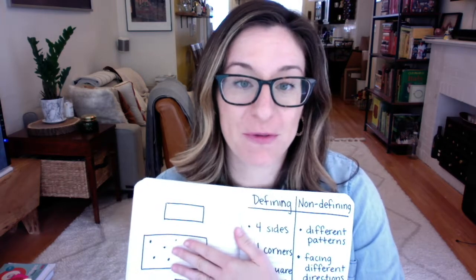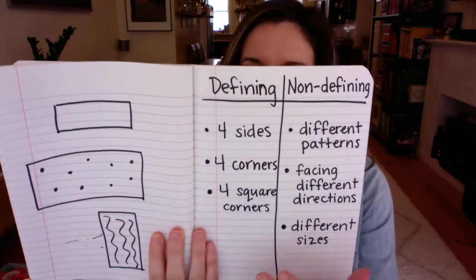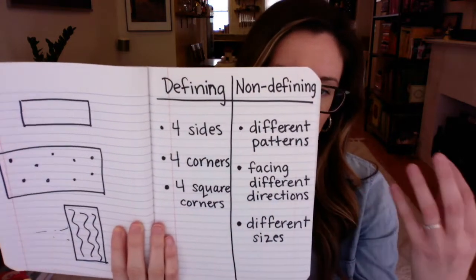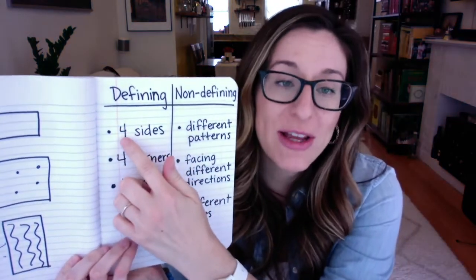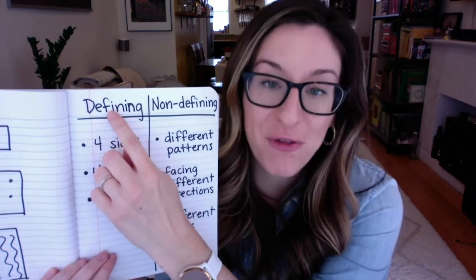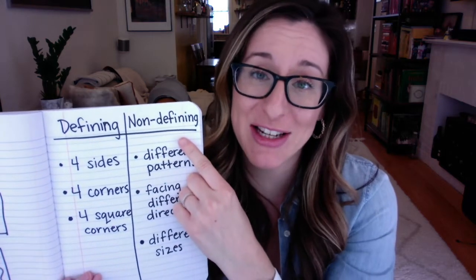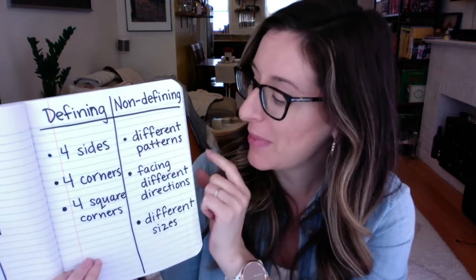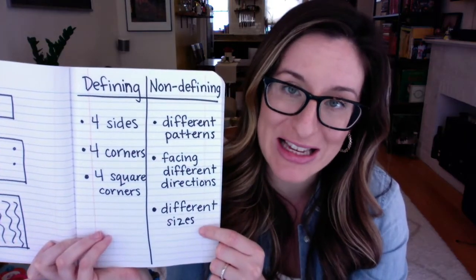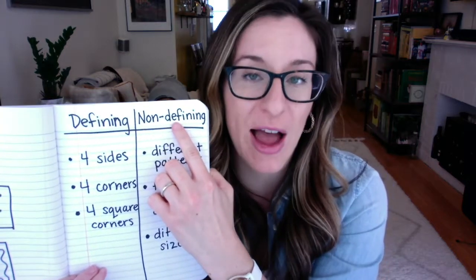Yesterday, we learned about defining and non-defining attributes of shapes. You saw a little visual in the newsletter that I sent to your parents. We drew shapes - we drew rectangles and made them a little bit different. We said that there are some things that always, always, always make rectangles rectangles. Those are the defining attributes. There are some things that some rectangles will have, but it's not necessary to make that shape a rectangle - things like the pattern, which direction it's facing, or what size it is. Those don't really matter for whether or not it's a rectangle. Those are non-defining attributes.